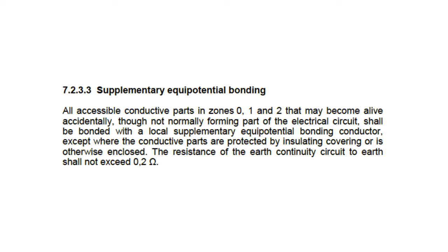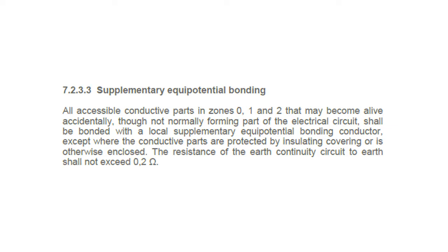Clause 7.2.3.3 tells us that any conductive part of an installation — like the metal frame of a pool pump — must be earthed, and that the earth circuit cannot have a resistance greater than 0.2 ohms. That's very low.